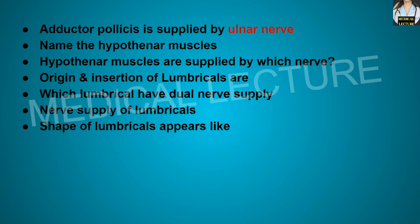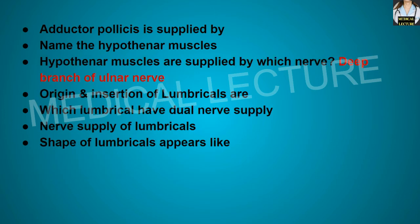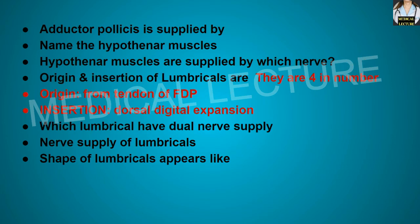Name the hypothenar muscles. There are three: flexor digiti minimi, opponens digiti minimi, and abductor digiti minimi. Hypothenar muscles are supplied by the deep branch of the ulnar nerve. What is the origin and insertion of the lumbricals? Lumbricals are four in number; they originate from the tendon of the flexor digitorum profundus and insert at the dorsal digital expansion.